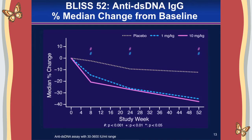Consistent with Belimumab's mechanism of action, which impacts cells producing antibodies and auto-antibodies, there were reductions in double-stranded DNA antibodies — one of the more common autoantibodies in lupus, often associated with renal manifestations. There was a rapid decline from the first eight weeks, reaching approximately 40% reduction versus 12% in the placebo group at the end of one year.